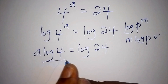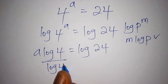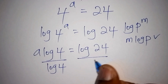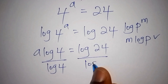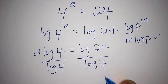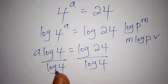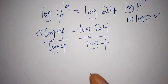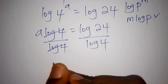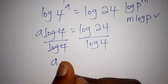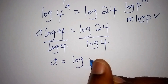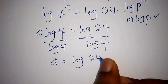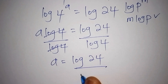Recalling that log of p to the power of m equals m times log of p, we apply this here to get a times log 4 equals log 24. From here we divide both sides by log 4 — log 4 and log 4 cancel — so we remain with a equals log 24 over log 4.